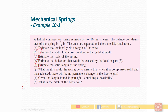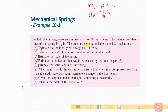Let's mention the data. We have a helical compression spring made of number 16 musical wire. The outside coil diameter (D_O) is 7/16 inches. The ends are square, meaning the ends are closed. There are 12 and a half total coils. Total number of coils is 12.5.